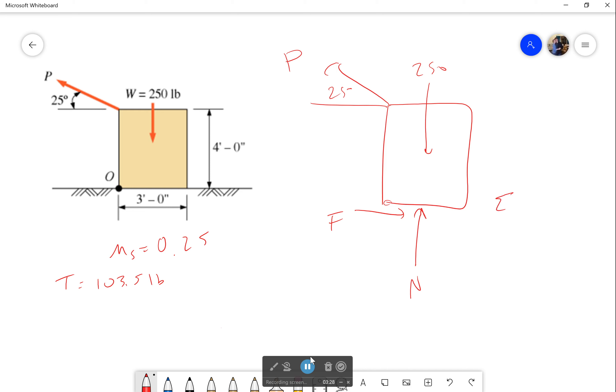So that only gives us our sum of forces in the X and sum of the forces in the Y which leaves us with 1, 2, 3 unknowns. So are we stuck? We're not actually because we know if it's about to slide that in this case we have reached our max frictional force and I can replace that with my max frictional force equation. Now with that I have the ability to solve.